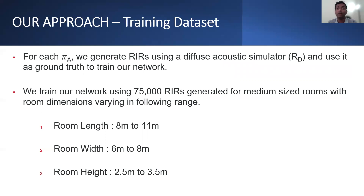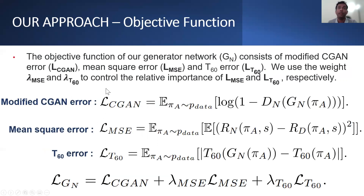We train our network using 75,000 room impulse responses generated for medium-sized rooms with room dimensions varying in the following range: in the X direction from 8 to 11 meters, in the Y direction from 6 to 8 meters, and in the Z direction from 2.5 to 3.5 meters. The objective function of our generator network consists of a modified conditional GAN error, MSE error, and reverberation time error. We use weights lambda_MSE and lambda_C360 to control the relative importance of the mean square error and the reverberation time error.